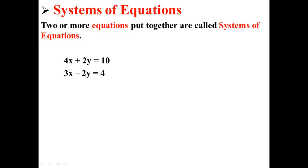Remember that two or more equations put together are called systems of equations. Here, we have a system of equations: 4x plus 2y equals 10, and 3x minus 2y is equal to 4.